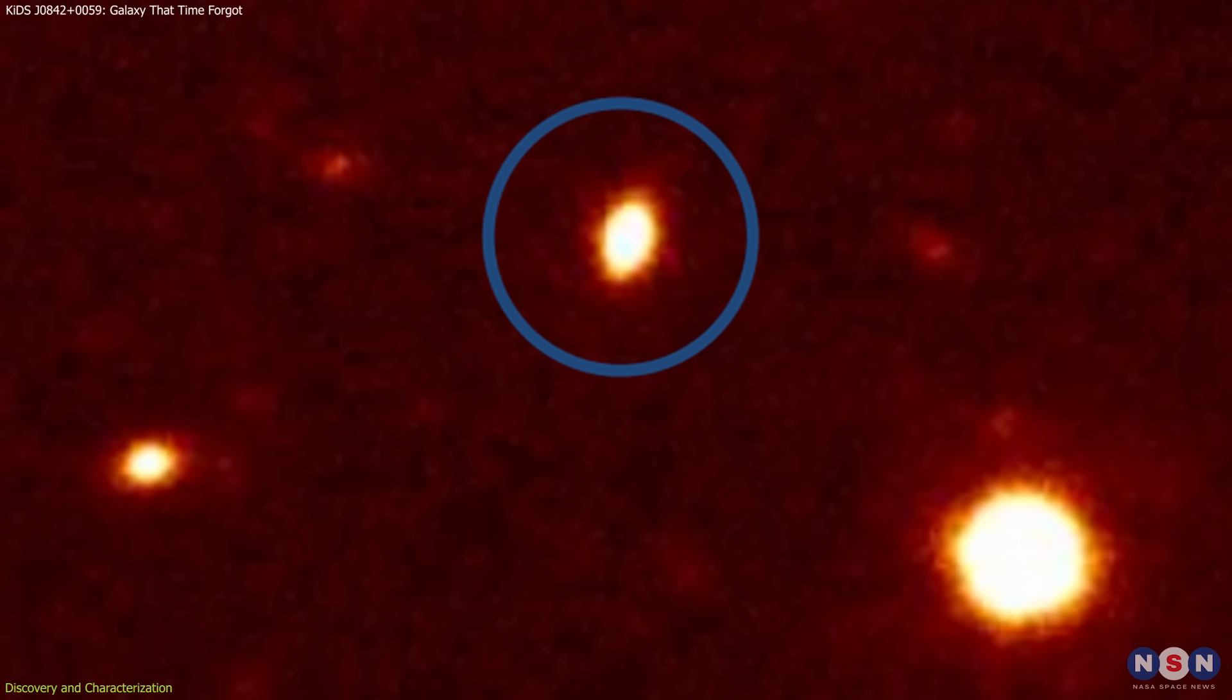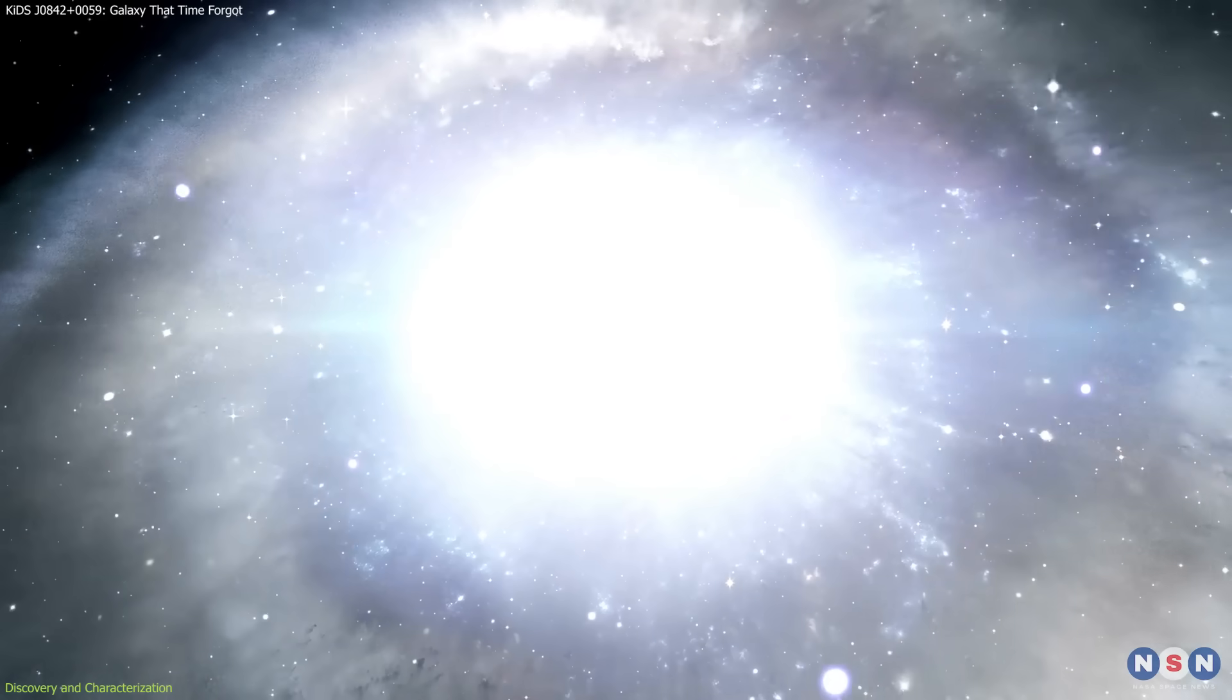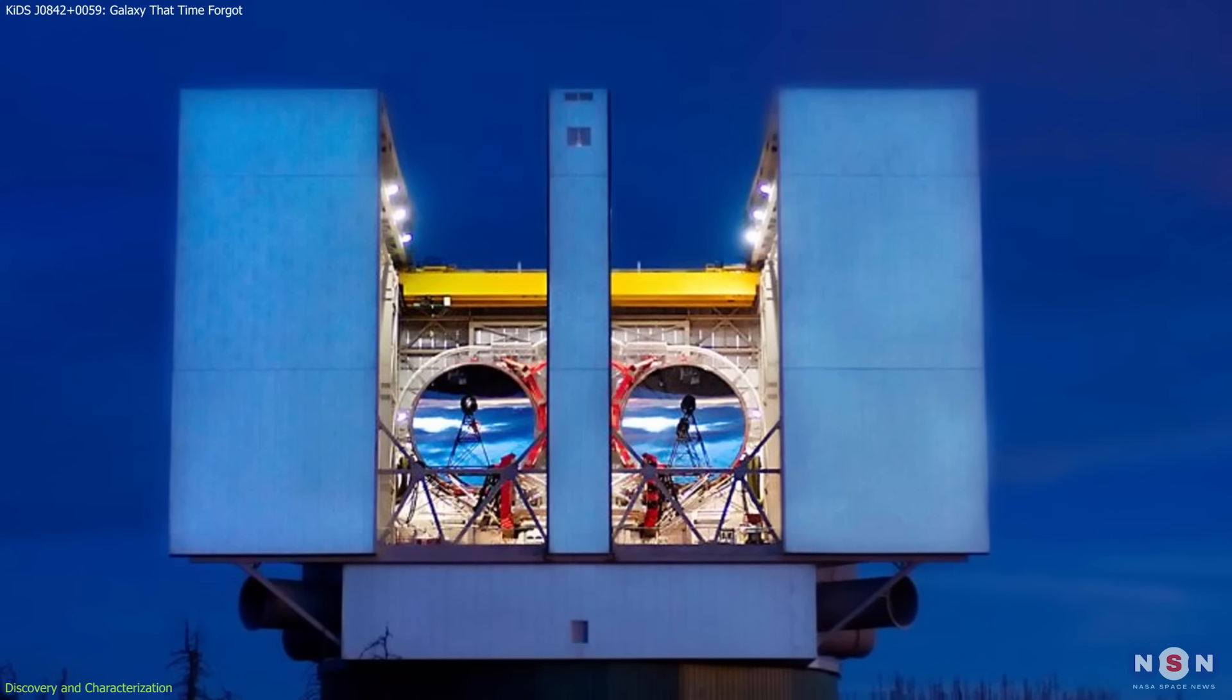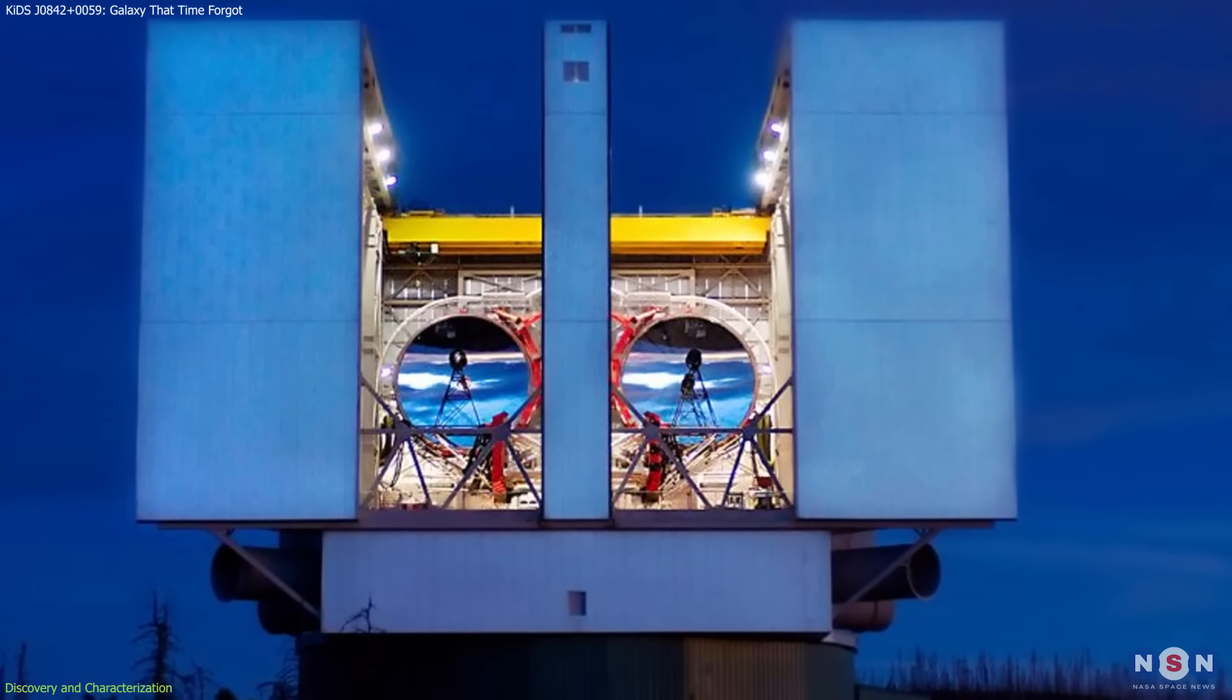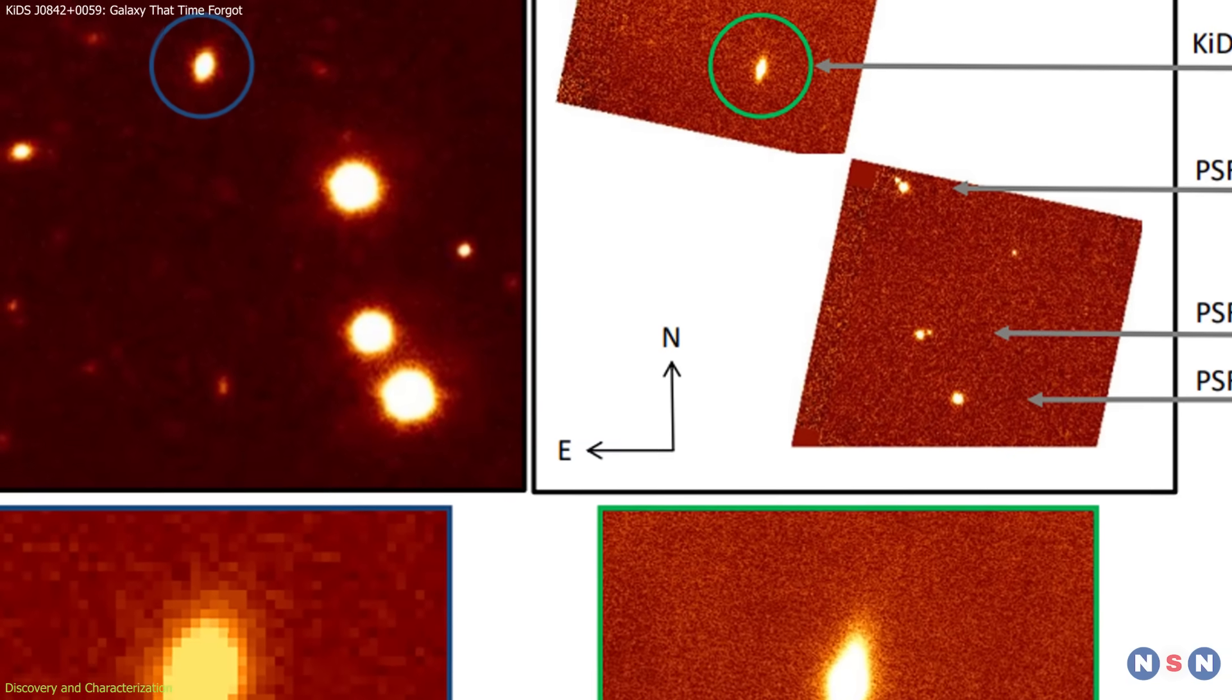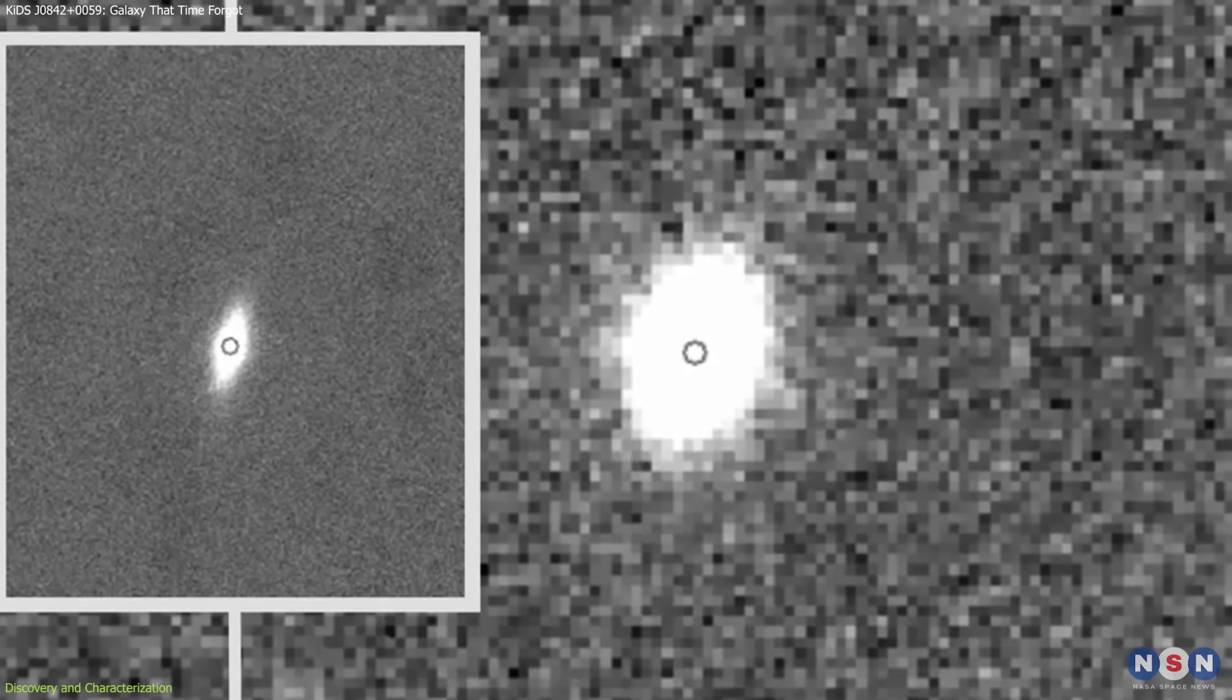These traits pointed toward a potential fossil galaxy, a system that formed early and then remained dormant. To confirm this, astronomers used the Large Binocular Telescope. Its adaptive optics system provided a much sharper image, up to 10 times the resolution of the original survey data.